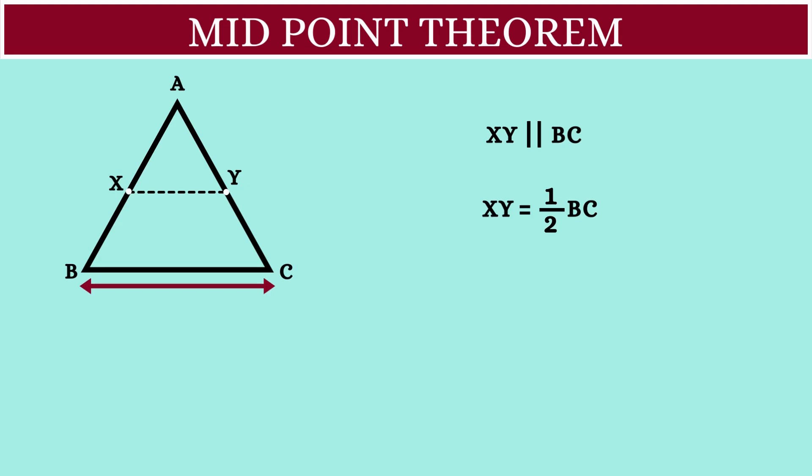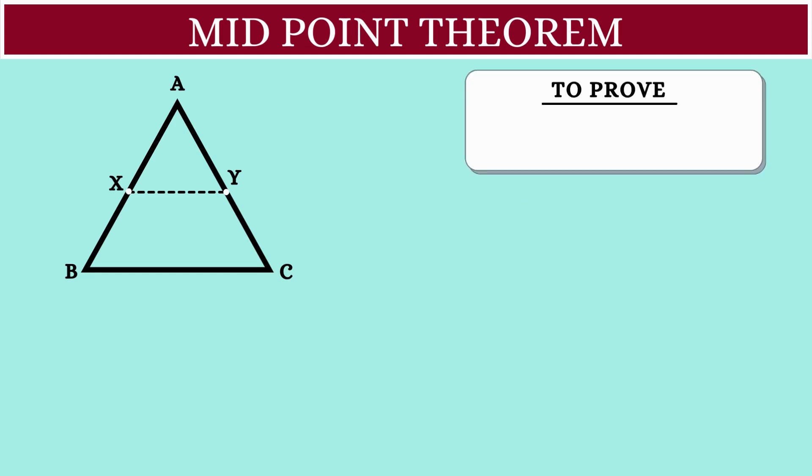Now let's learn the proof for this midpoint theorem in detail. There will be two things to prove. First, XY is parallel to BC, and the second is XY is half of the length of BC.